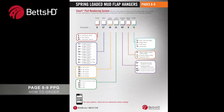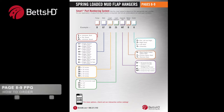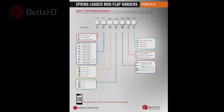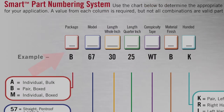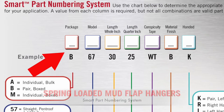Betts HD Smart Part Numbering System makes part identification simple. All of the characters represent unique values for the parts attributes. This is the breakdown for our spring-loaded mudflap hangers.